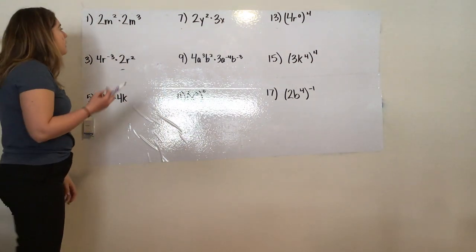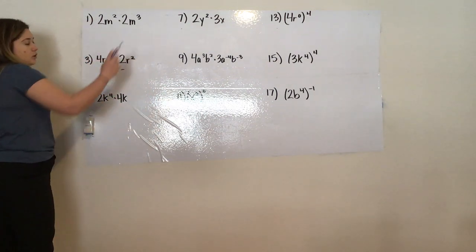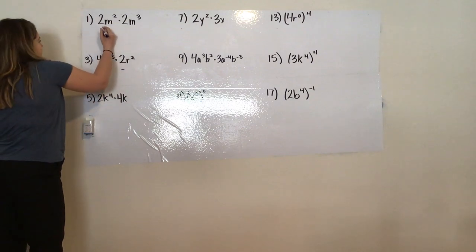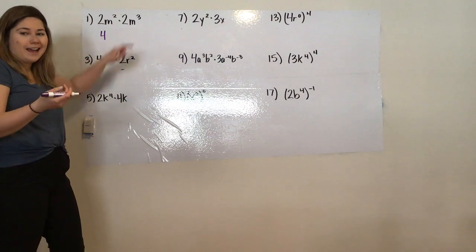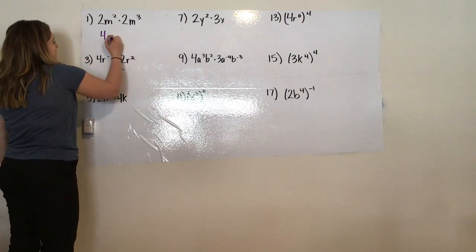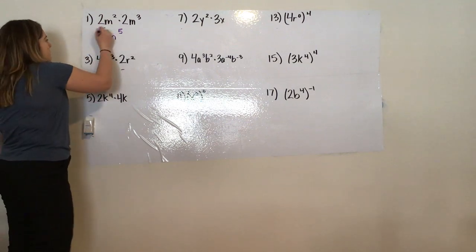For number one, we're going to treat numbers as numbers. When it says multiply 2 times 2, that gives me 4. It's the multiplicative rule of power, so I'm going to add the power because they're the same base, which is m. So now I just have 4m to the power of 5.